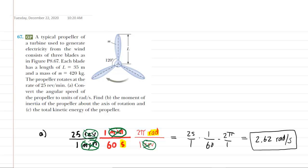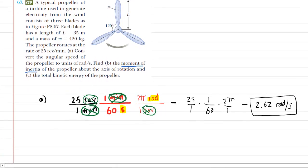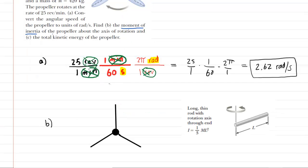Let's take a look at part B, which says find the moment of inertia of the propeller about the axis of rotation. In this chapter we've learned how to determine the moment of inertia of various types of objects — cylinders, rods, etc. — but we haven't learned how to calculate the moment of inertia of a propeller. So what we're going to do is offer a simplified version of the propeller. We have redrawn it — it kind of looks like a peace symbol — and we'll treat the individual blades as long, thin rods.